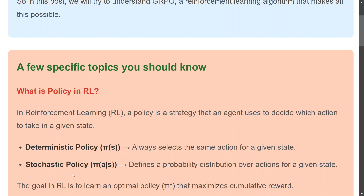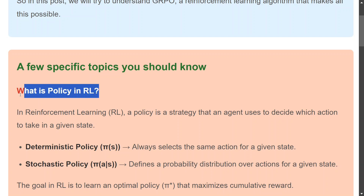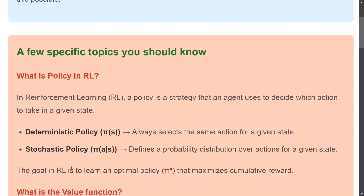The policy is an algorithm which helps you choose what action to take next. As you can see here, there are two types of policies: deterministic and stochastic. Stochastic is probability-based — you run an algorithm and depending on the probability of different actions, you choose one. Deterministic always selects the same action, so it is mostly rule-based. Depending upon the policy algorithm, you take your next action and try to go as far as possible in the game.